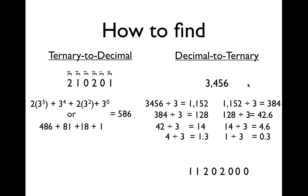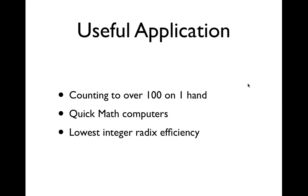So 3,456 in decimal converts to 11202000 in ternary. And again, that to help you out, so you can actually know what place it is in.